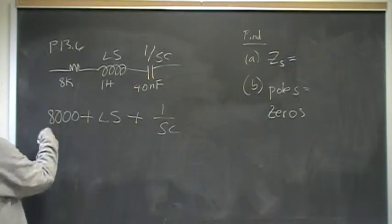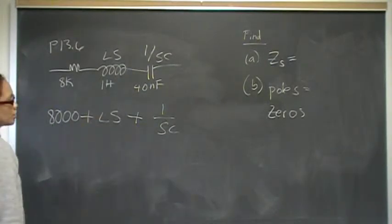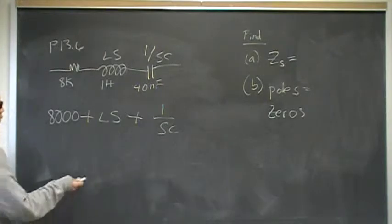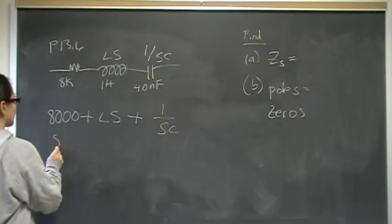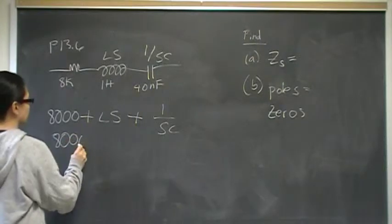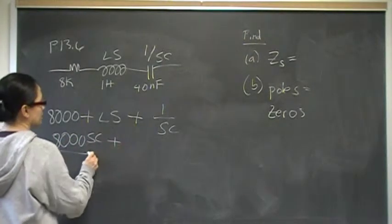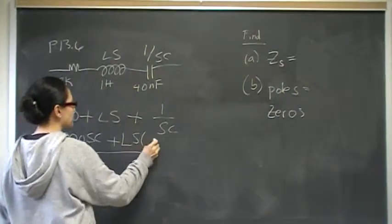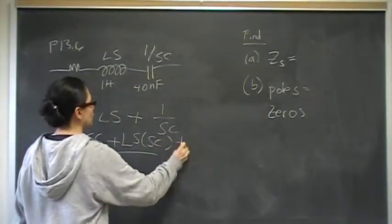These two guys need to be multiplied, they need an Sc common denominator in order to add together. This is going to be 8,000 Sc plus Ls times Sc plus 1.